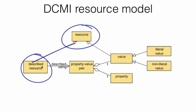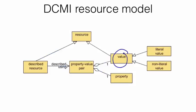A described resource is described using a property-value pair, and a property-value pair has a value and has a property, and it has exactly one of each. A property-value pair has one property and one value, and notice that a value can be of two types. There are two types of value.